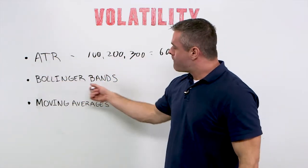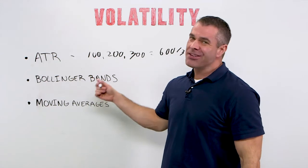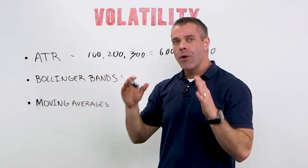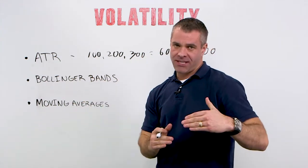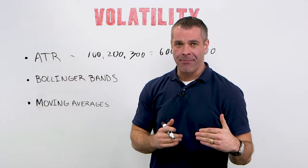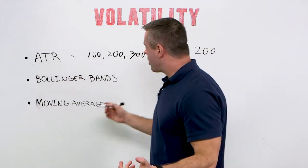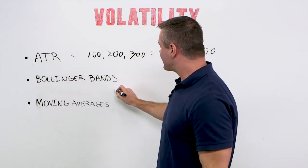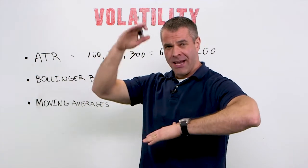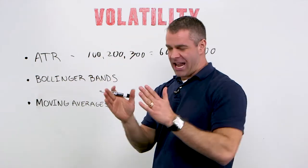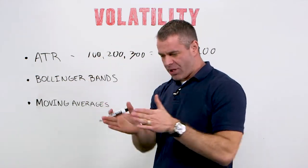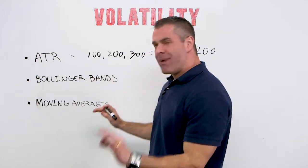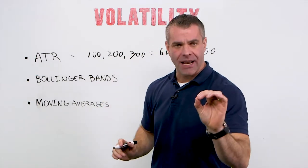The same thing we do with Bollinger Bands. This is one of my favorite volatility gauges because it's a great visual representation of what's happening in the market. Bollinger Bands are essentially a volatility band — it kind of looks like a really tight range, and then it bulges. Really tight and bulges. And it's based around a moving average.